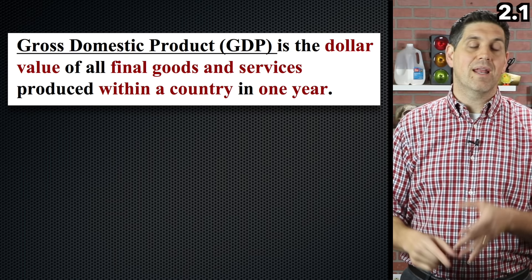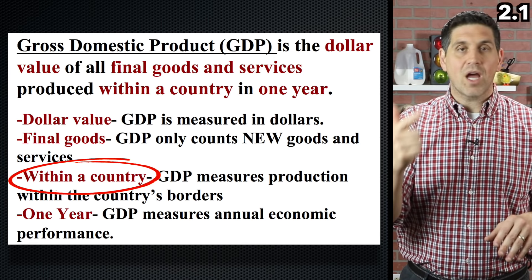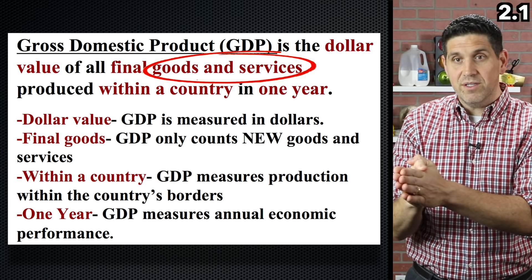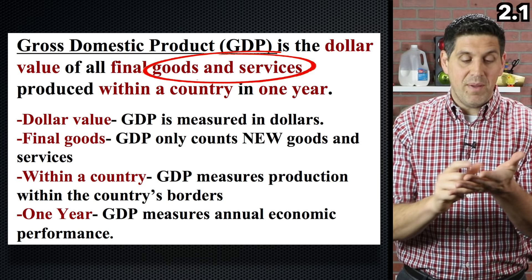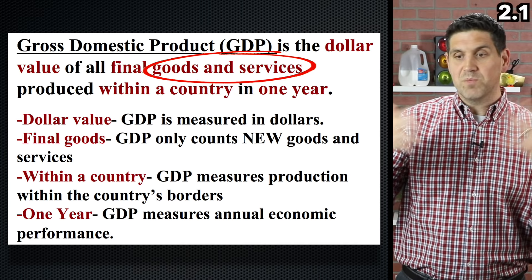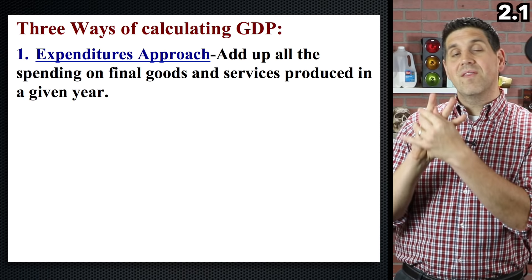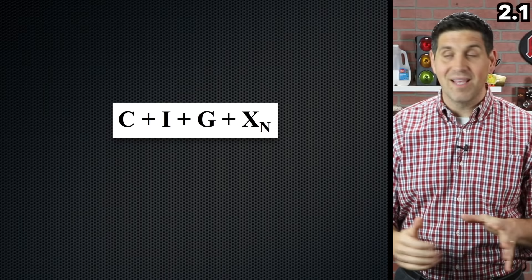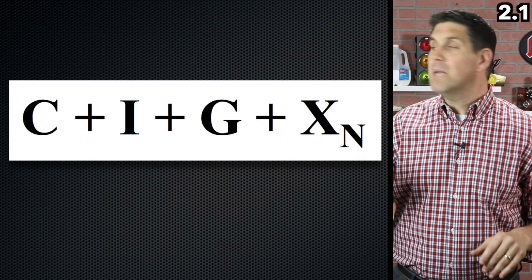Keep in mind that we're talking about both goods and services. Teachers and professors will give you questions asking, does this count towards GDP? For example, tuition for college does count towards GDP because a service was provided. The expenditures approach is by far the most important one. It adds up all the spending on all the goods and services in the country and gives you the most important equation in all of macroeconomics: C plus I plus G plus XN.